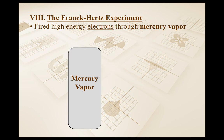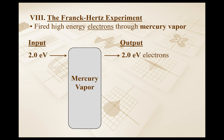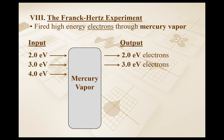Begin by firing an electron that has a kinetic energy of 2.0 electron volts. When it goes through the mercury vapor, nothing happens — the electron just comes back out with the same kinetic energy. How about 3.0 electron volts? Passes through the mercury vapor, and nothing happens. How about 4.0 electron volts of kinetic energy? Nothing.